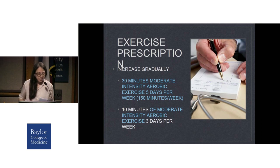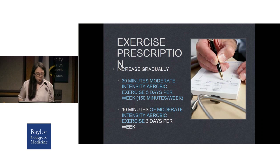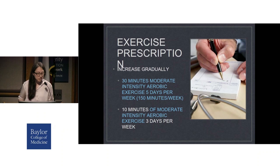An exercise prescription is not static. Even though our goal is 30 minutes of moderate-intensity aerobic exercise five days a week, or 150 minutes per week, we can start at 10 minutes of moderate intensity three days a week and increase over time to reach our goal. Doing so allows for gradual increases in exercise, which not only increases compliance for beginner exercisers, it decreases the risks of exercise.